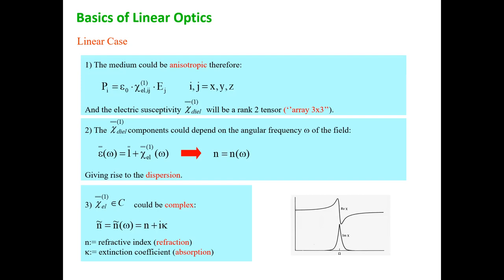You apply the field in one direction and the polarization may be in another direction — this can happen in anisotropic media. In general, the relationship between polarization and electric field goes through a tensor: the electric susceptibility tensor, which in our simple approach is a 3×3 matrix. Furthermore, the components of this tensor may depend on the frequency of light, so the refractive index can depend on frequency — this is called dispersion of the refractive index.